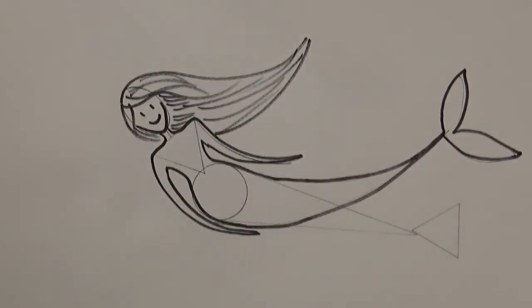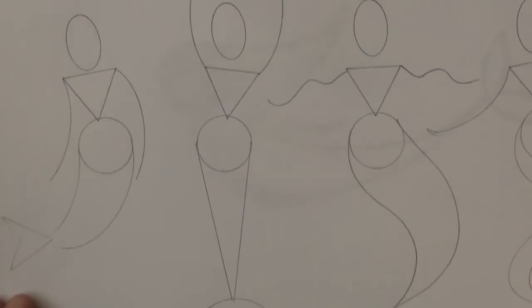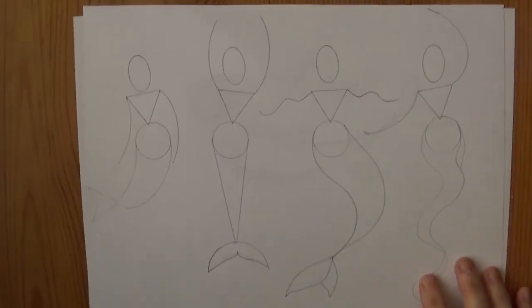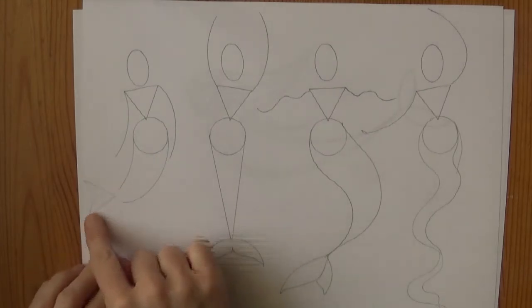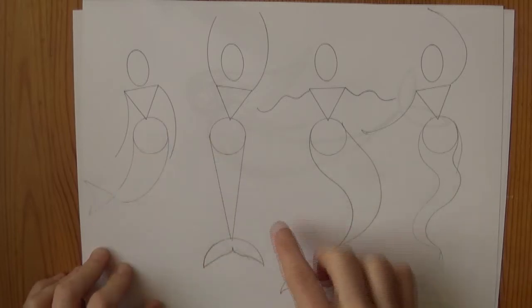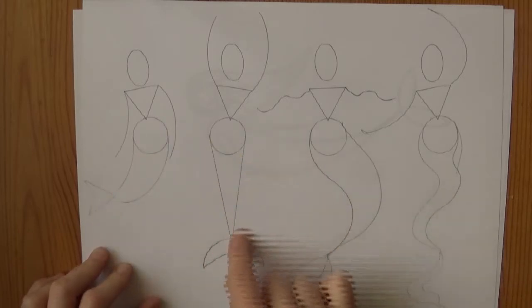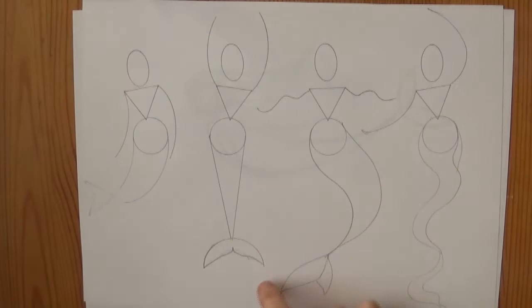You can play around with these shapes a lot and make all kinds of different shapes of mermaids. You can see here I made it with a triangle tail and I shortened her tail. Here is just the straight lines tail, and I put the arms up.